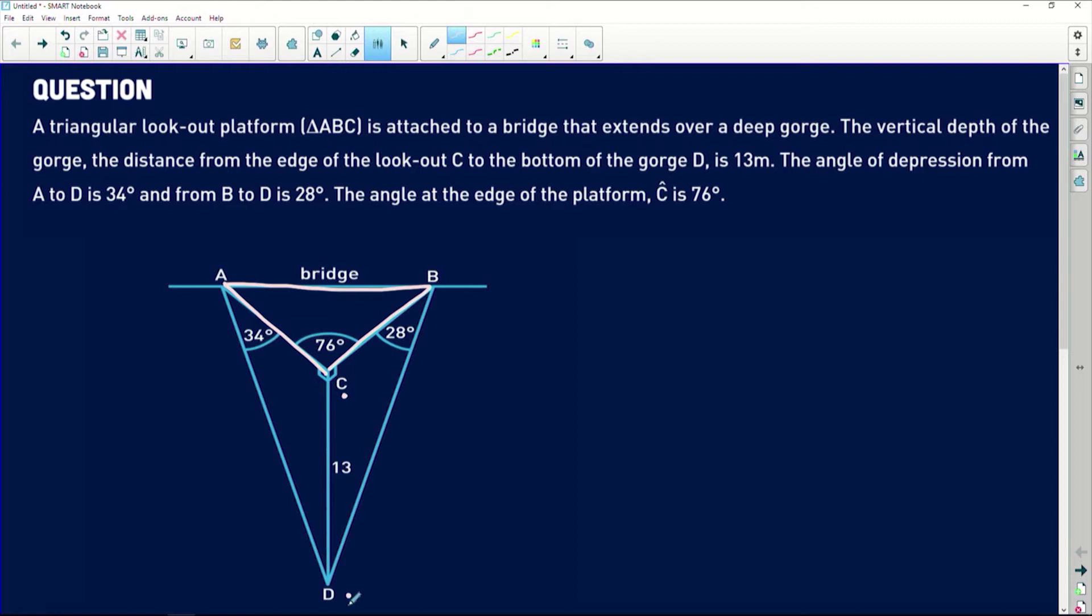The angle at the edge of the platform, i.e. angle C, is 76 degrees. Okay, so just to give you an overview of how to interpret this in a 3D context, they're basically saying triangle ABC is this flat platform that people can stand on and look out over the gorge, and distance CD is the distance into the gorge. So that's where the 3D element comes in.